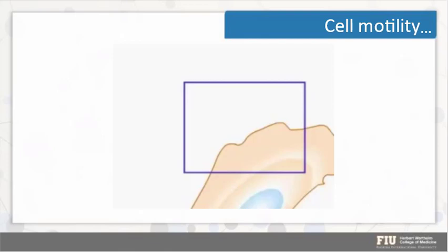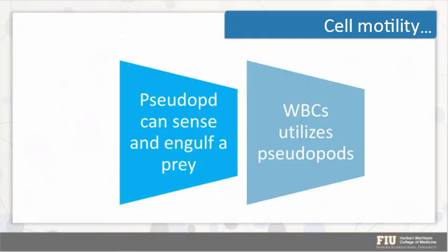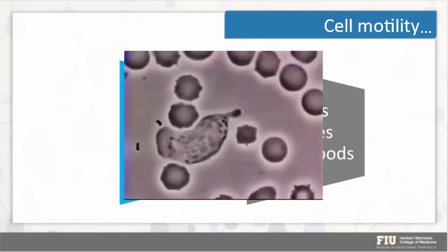The video here will help you visualize the sequence of events in pseudopod motility so that you better understand the extension. Apart from locomotion, this was just a couple of bullet points that we turned into a smart art from PowerPoint. White blood cells make use of pseudopodia, and there's also a video showing a white blood cell chasing a bacterium.